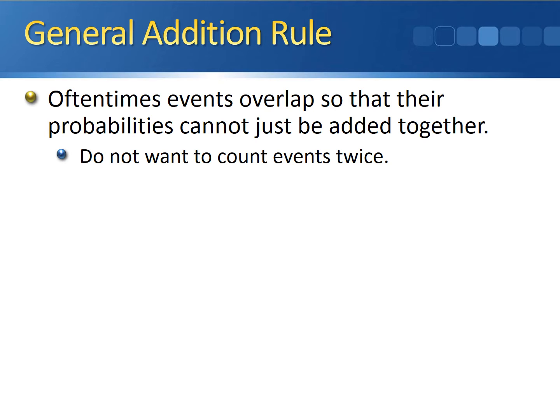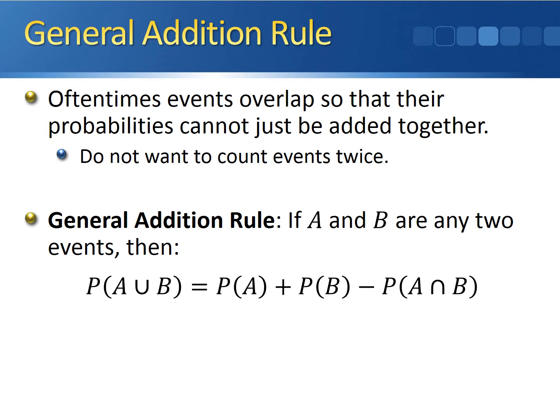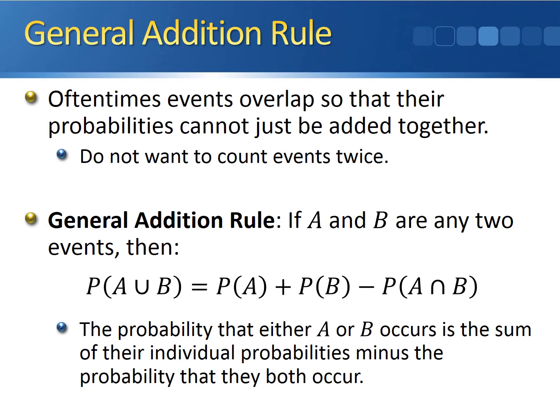The solution to this problem is the general addition rule. The general addition rule says that if A and B are any two events — they don't have to be mutually exclusive — then the probability that either A or B occurs (the probability of the union) is the sum of their individual marginal probabilities, P(A) plus P(B), minus the probability of the intersection — minus the probability that both A and B occur at the same time.